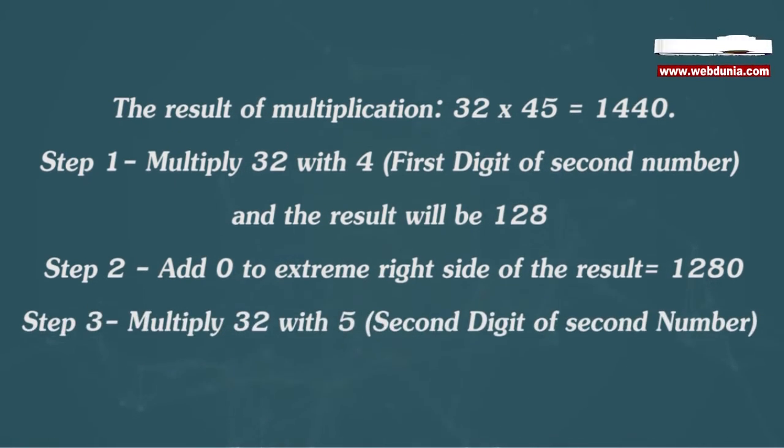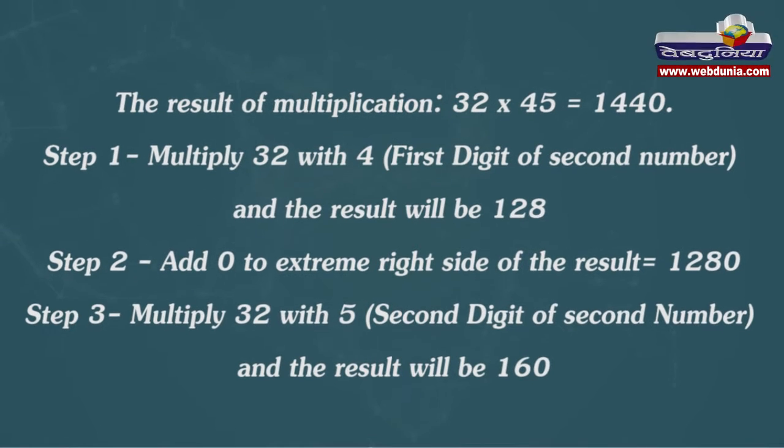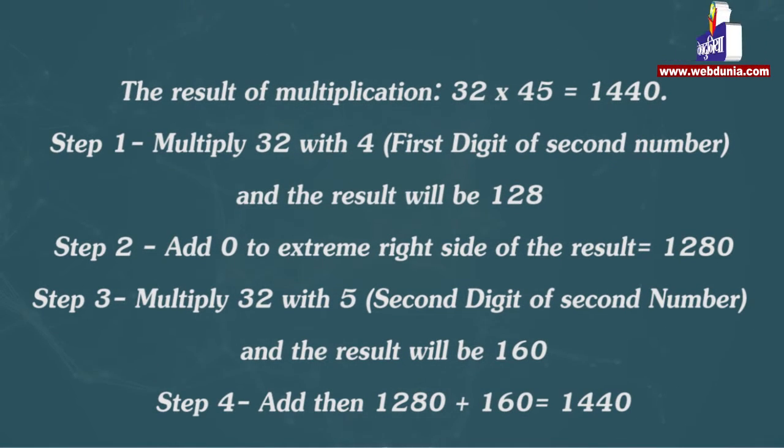Step 3: Multiply 32 with 5, second digit of second number, and the result will be 160. Step 4: Add 1280 plus 160 equals 1440.